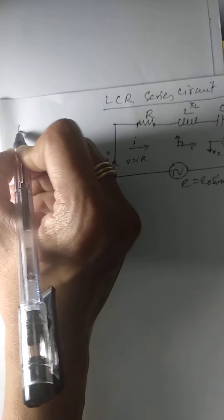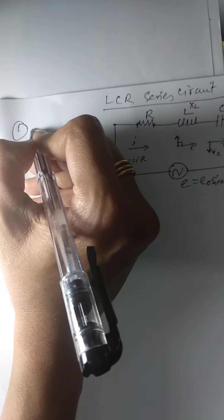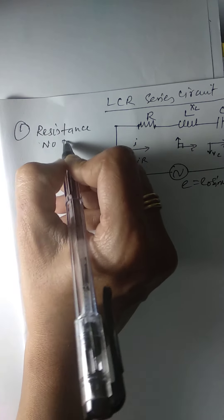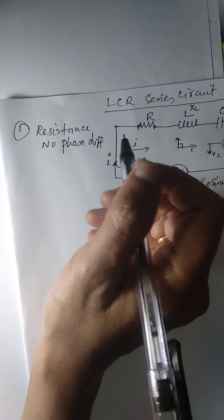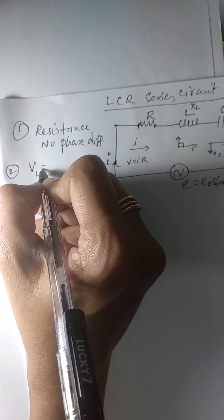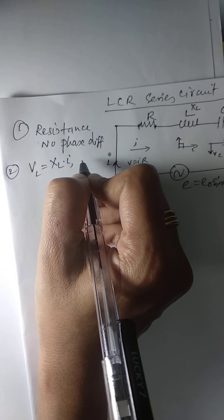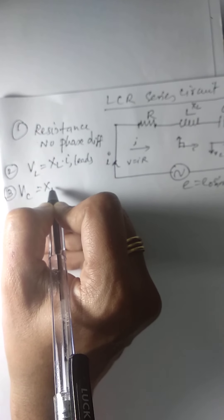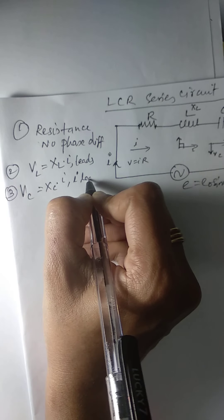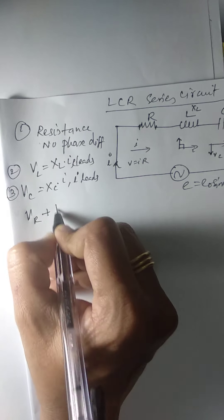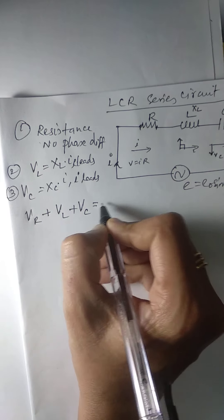As we already discussed: when current passes through a resistor there is no phase difference. When current passes through an inductor, E leads by π/2. When current passes through a capacitor, I leads by π/2. These are the three phase relationships for the three components in the LCR series circuit.